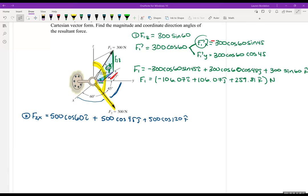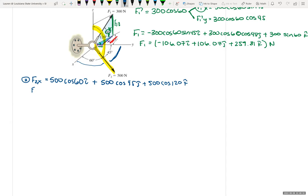All right, and when we put this into our calculator, we get that F2 is equal to 250 I plus 255 J minus 250 K Newtons.